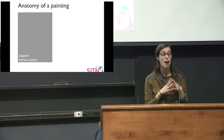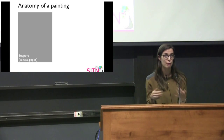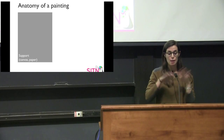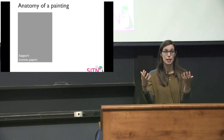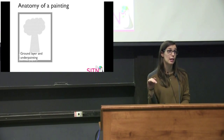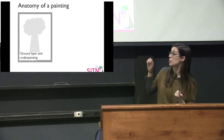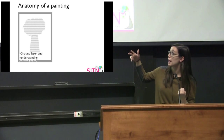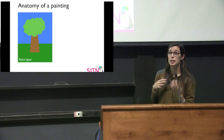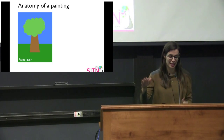Before I go any further, I want to give a little background on the anatomy of a painting, since I'll mostly be focusing on paintings, although a lot of these techniques can be used for statues and works on paper as well. If you have a painting, the first thing you start with is some sort of support — whether that's a canvas, paper, or something else. On the support there's generally a ground layer. If you've ever painted a room, you might be familiar with primer. With a painting there's usually a ground layer, and within that there can be an underpainting or underdrawing where the artist will start to sketch out the composition they want.